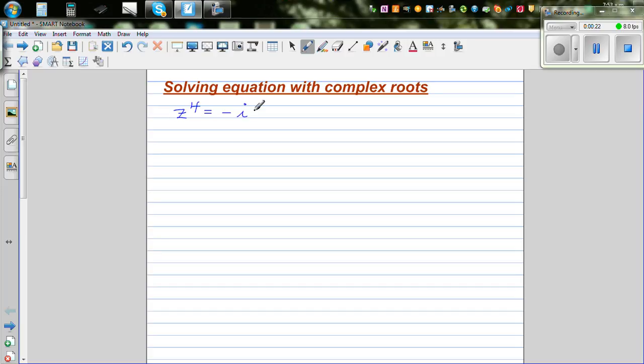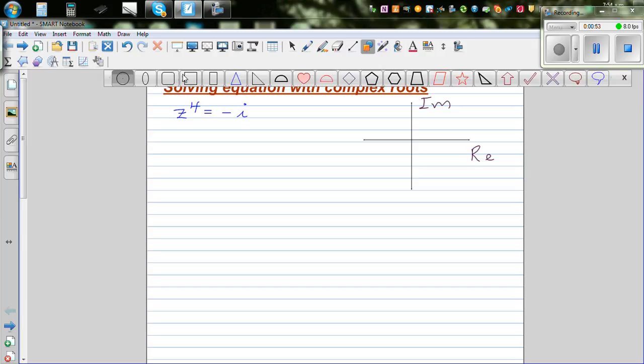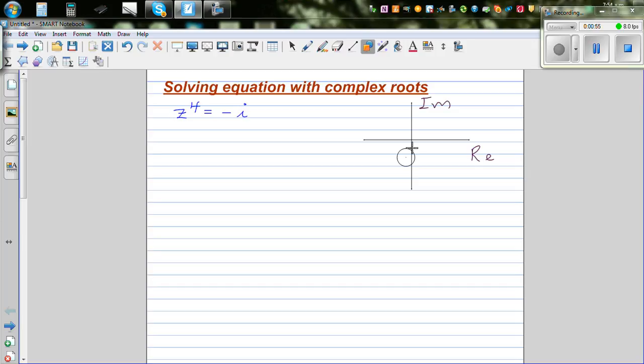Now, as you know, this is a fourth power equation which has to have 4 roots. Let's understand what is minus i. So let me draw a diagram. This is your imaginary arm and this is your real arm. Say this is 1 and this is negative 1. So let me draw a circle, as exact as possible.